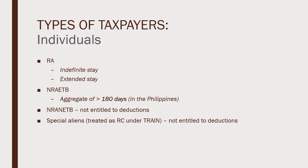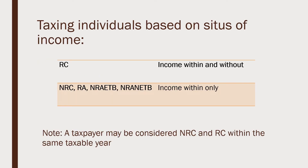Resident aliens (RA) are people with indefinite or extended stay here who are not mere transients. NRA-ETB, or non-resident alien engaged in trade or business, have aggregate stay in the Philippines of more than 180 days. NRA-NETB is not considered doing business here and is not entitled to any deductions. For special aliens, prior to TRAIN Law they were a separate category, but now they are already considered as resident citizens.